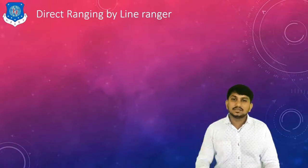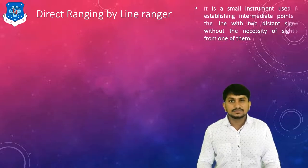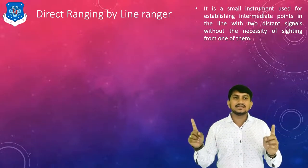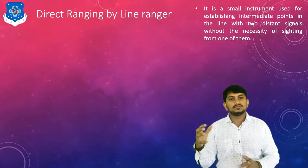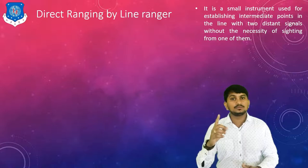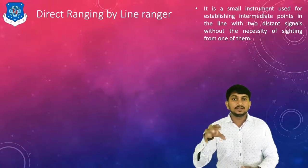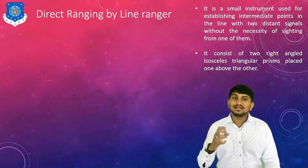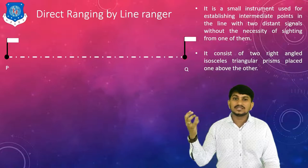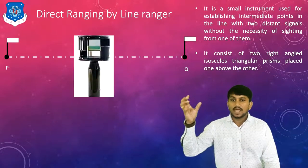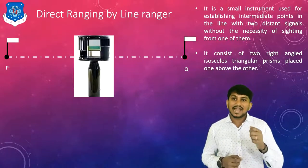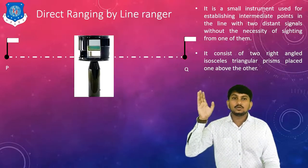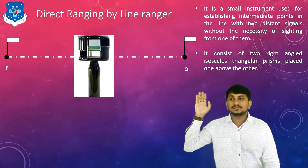The second method of direct ranging uses a line ranger. It is a small instrument used for establishing intermediate points in line with two distant signals without the necessity of sighting from one of them. In the first method, we have to go to the end stations A and B, but with the line ranger, you can range without going to the end stations. It consists of two right-angle isosceles triangle prisms placed one above the other.